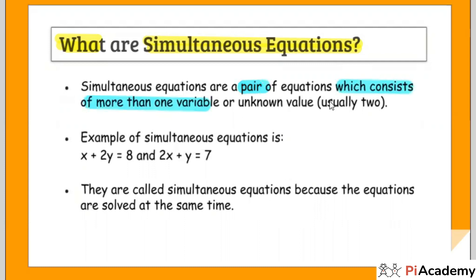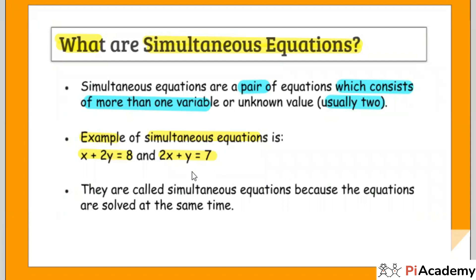Usually we have two variables, as per our syllabus. For example, here you can see: x plus 2y equals 8, and 2x plus y equals 7. Normally these are linear equations, but combined they are called simultaneous equations. There are two equations — that's a pair — and there are two variables: x and y. So this is a simultaneous equation.